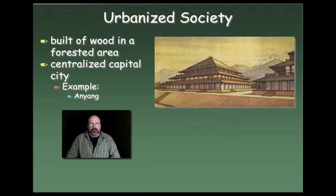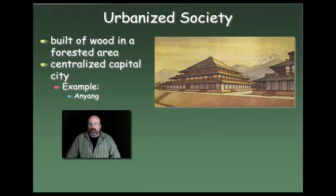What we know about the Shang is that they basically built their cities of wood, usually in a forested area. They had a centralized capital called Anyang, which is the best example. Much of this architecture doesn't exist anymore since these early cities were made of wood, but essentially their cities were usually located along river valleys — in this case the Yellow River Valley.